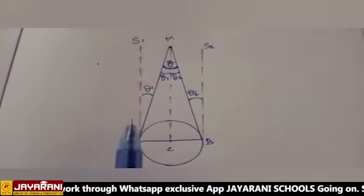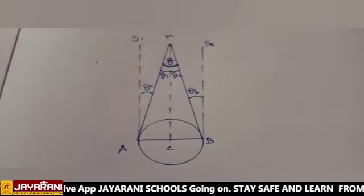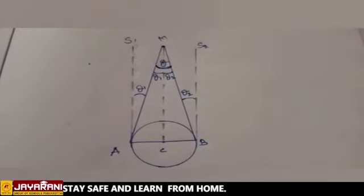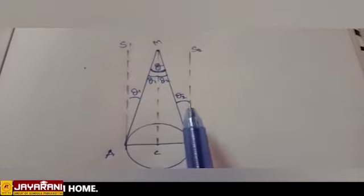Here, these two dotted lines, S1 and S2 are imaginary lines. These lines make angles theta 1 and theta 2.